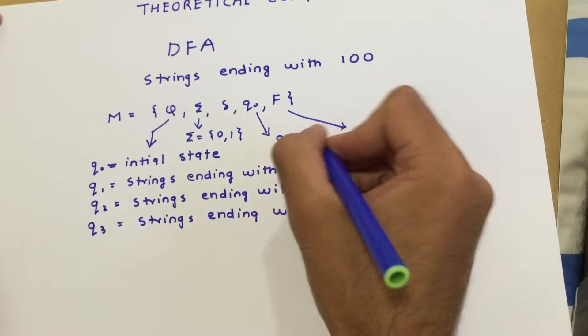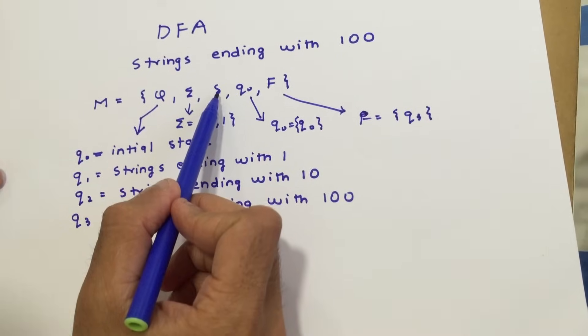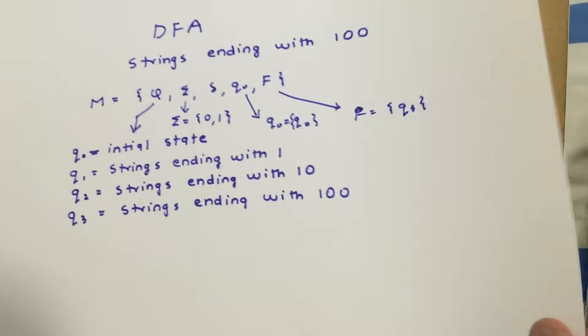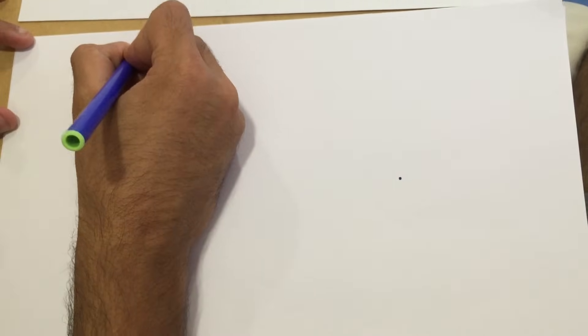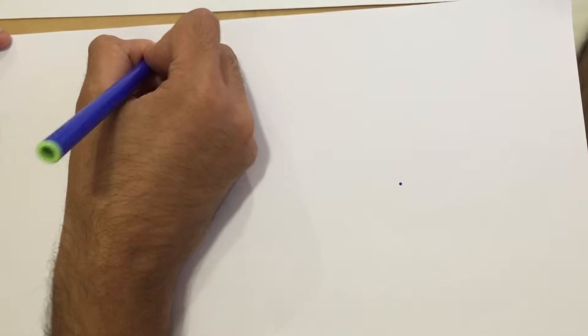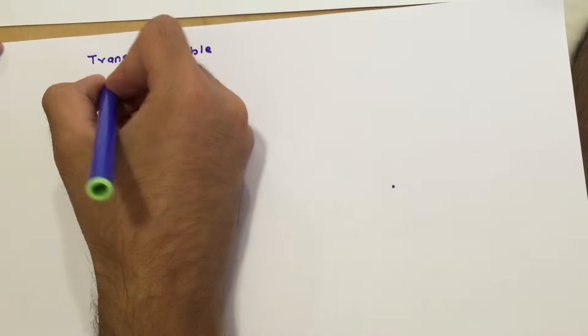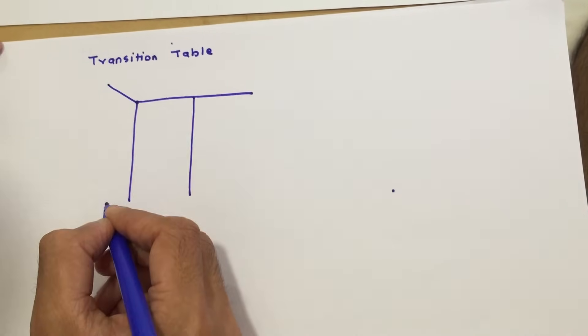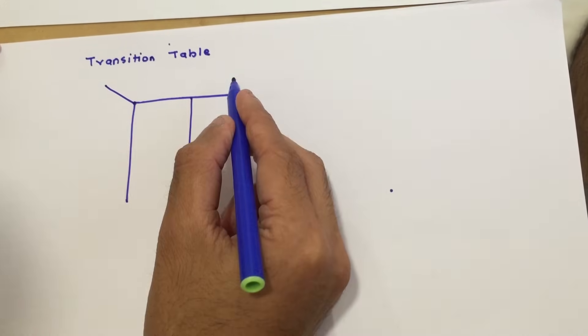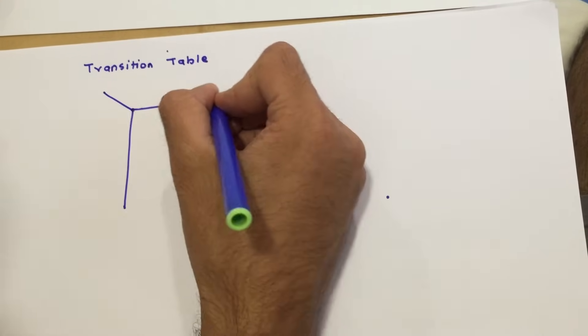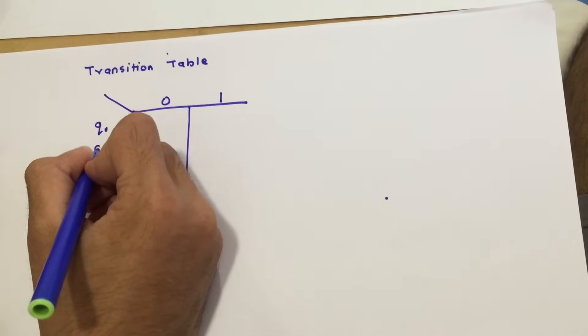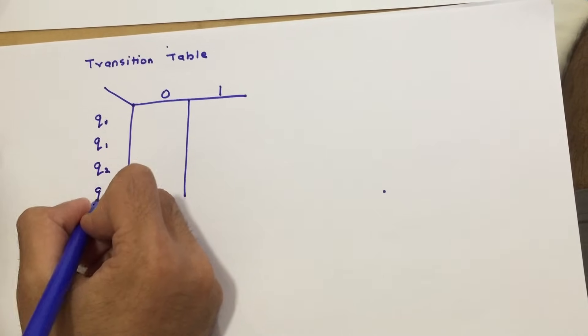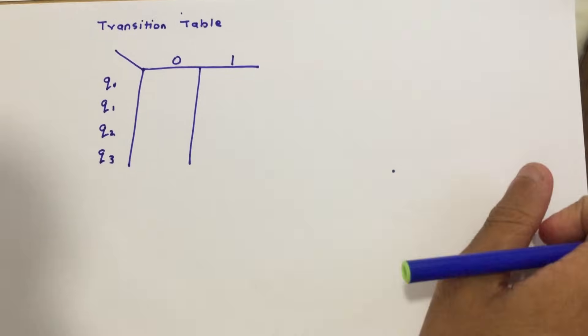Now all we have left is to calculate the transition function. I am going to do that with the help of a transition table. On one axis we write all the states and on the other axis we write all the input alphabet — zero and one. The states are q0, q1, q2, and q3.